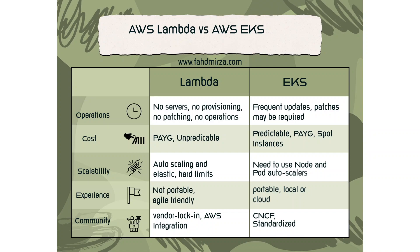A very important consideration is security. Both Lambda and EKS can use AWS IAM for authentication and authorization, and both integrate nicely with IAM. At the end, it all boils down to your application requirements. Whenever you are faced with the decision of which one to use — Lambda or EKS — go through these yardsticks and make your decision.